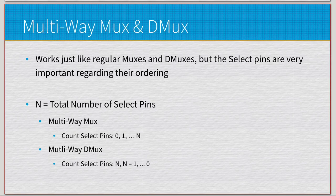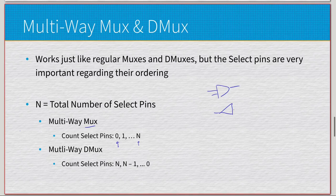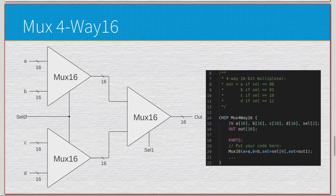Moving on to multiplexers and demultiplexers — there is a specific way we count the MUX and DMUX select pins. N is the total number of select pins. For the regular MUX we count from zero up to the number of select pins, whereas with the demultiplexer it works in a mirrored way. The MUX looks like a right-facing triangle — two inputs to an output — while the DMUX is a left-facing triangle from one input to two outputs. The select pins for DMUX count from N minus one down to zero.